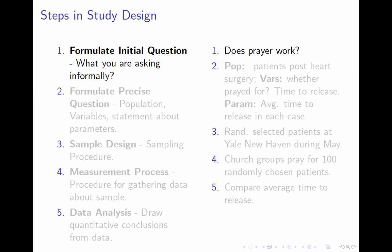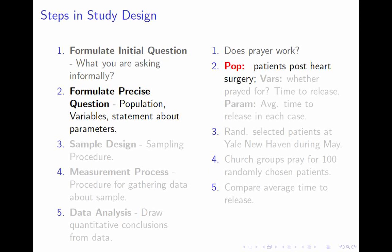The second step is to turn that into a precise question — a statement or question about parameters, which are summaries of a variable in a population. So the first step is to turn that broad, vague question into a population, one or more variables, and some statement about one or more parameters. 'Prayer works' is too vague. One thing people do with prayer is pray for sick people, hoping it will help them get better. So a more concrete question is: do sick people who get prayed for get better faster than those who don't?